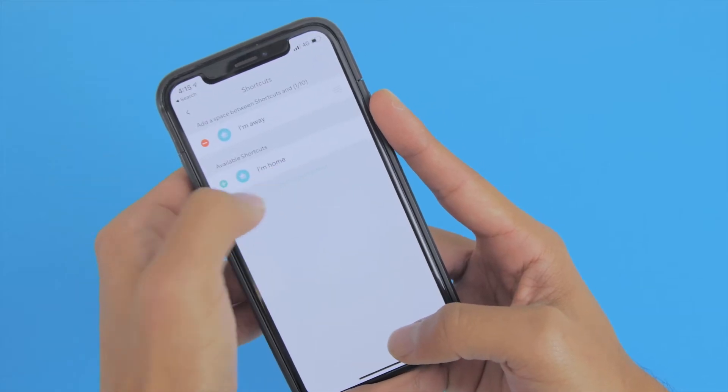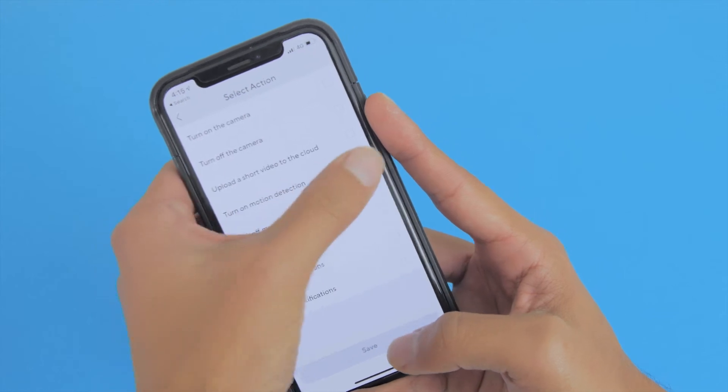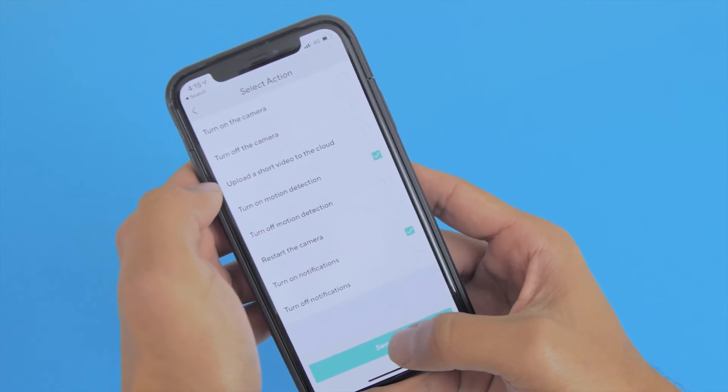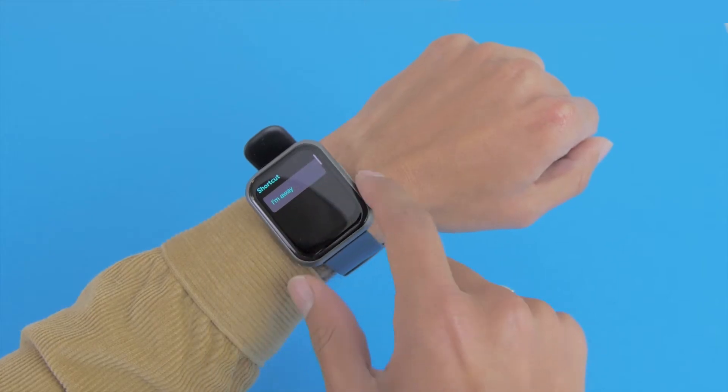Wise makes a lot of other smart gadgets as well, like bulbs, plugs, and cameras, and you can control all of these products from the watch itself. So for instance, I've got the Wise Cam V2 and I can trigger that to turn on with the notifications as well as motion detection from the watch itself.